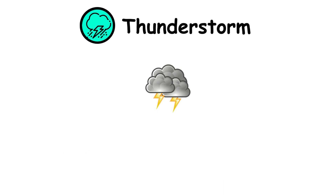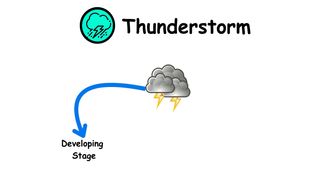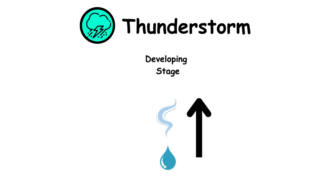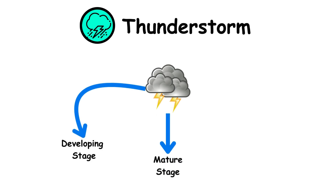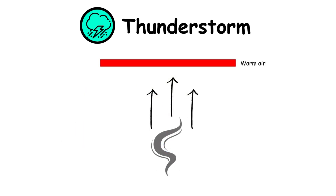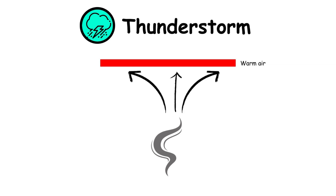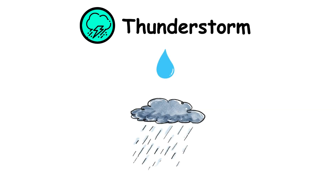Thunderstorms require three stages in order to form. The first is the developing stage. During this stage, masses of moisture are lifted upwards as vapors into the atmosphere. The next is the mature stage. In this stage, the air continues to rise until it reaches an area of warmer air and can rise no farther. This air is spread out, which gives it an anvil shape. The air melts into droplets and comes down as rain.